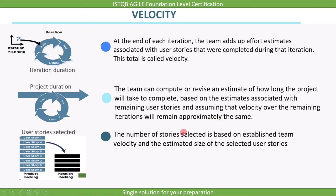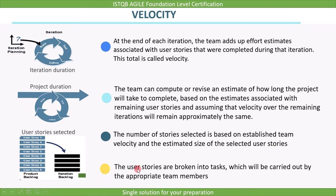The number of stories selected is based on established team velocity and the estimated size of the selected user stories. After the contents of the iteration are finalized, the user stories are broken into tasks, which will be carried out by the appropriate team members. This is how user stories are selected based on team velocity and tasks are assigned to team members.